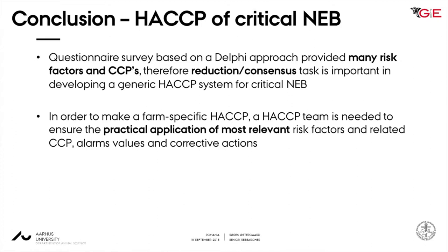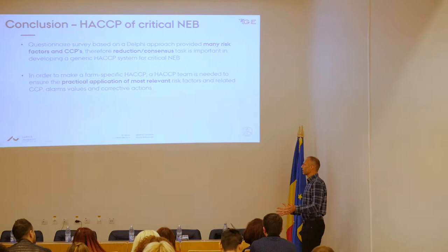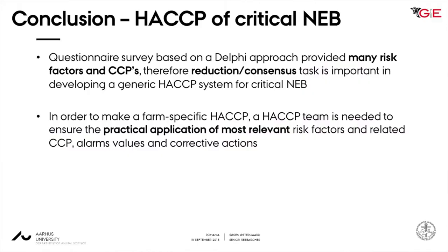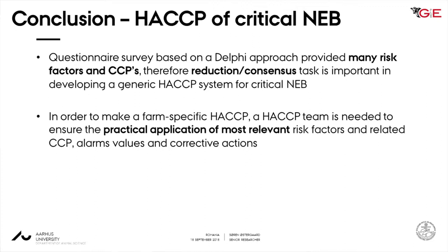Conclusion from this questionnaire survey based on the Delphi approach: it provided many risk factors and critical control points. Reduction for consensus is important to develop a generic HACCP system. It's also clear from the study that to make this practically applicable in a herd, you need a HACCP team to use this catalog based on the study and reduce it to what is relevant in your herd, because many of these tasks are not relevant in all herds. But it's a starting point — pick from this and find out which risk factors are important in this herd and which critical control points should you select.